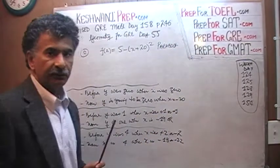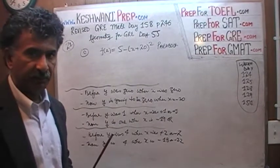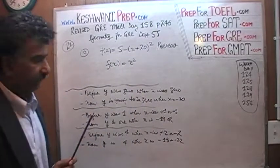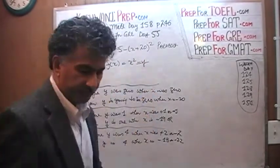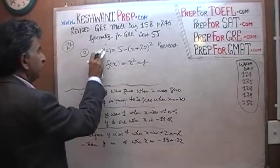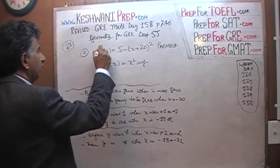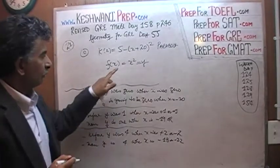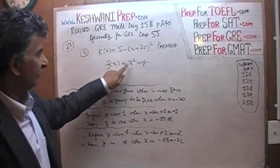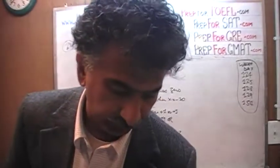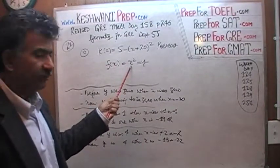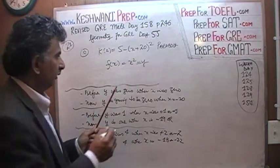Now the standard form of a parabola that we have come across many times looks something like this — y equals x squared. Obviously if I'm going to call this function f, I can't call that also, that's going to be confusing. I'm going to give it a new name — I'm going to call it k of x. The question is how do we go from y equals x squared to y equals 5 minus x plus 20 squared? That transition is what we have to understand first.